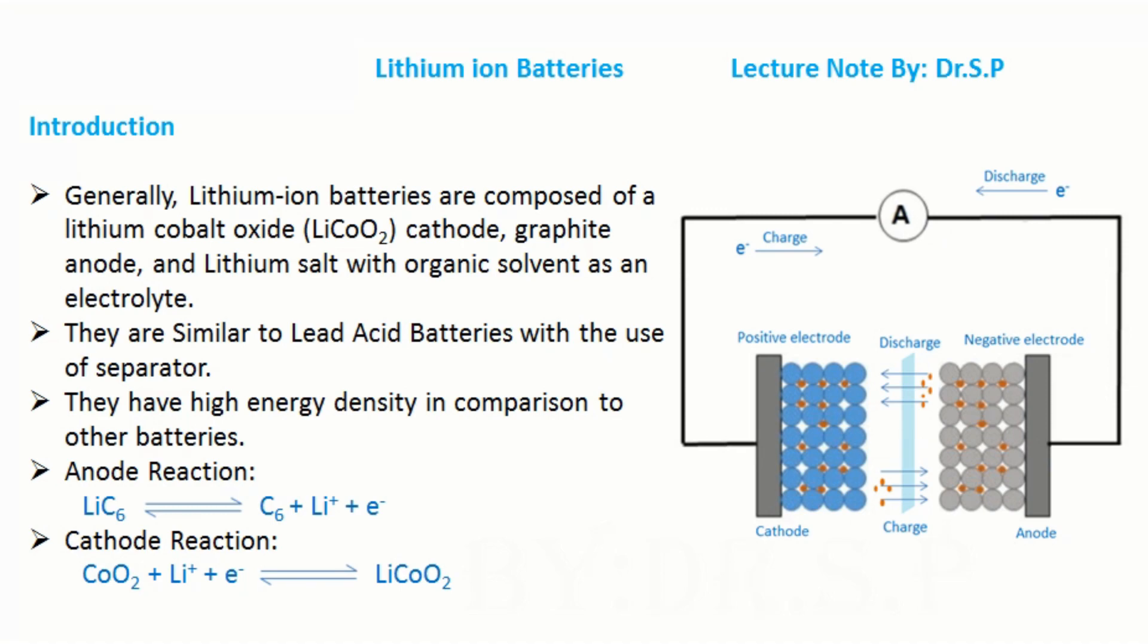Generally, lithium-ion batteries are composed of a lithium cobalt oxide cathode, graphite anode, and lithium salt with organic solvent as an electrolyte.